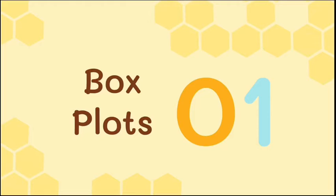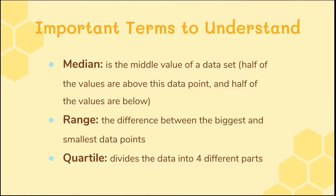So first we have box plots. The important terms to understand include the median, which is the middle value of a data set — half of the values are above this data point and half will be below. The range of a data set is the difference between the biggest and smallest data points. A box plot shows the whole range, and a quartile divides the data into four different parts, which will be shown in a box plot.